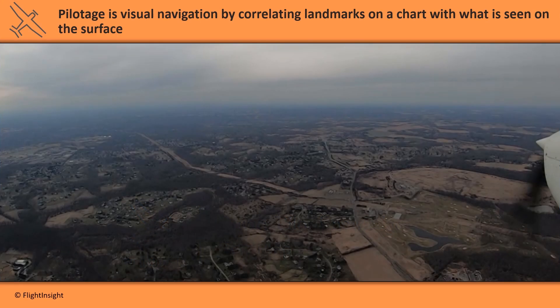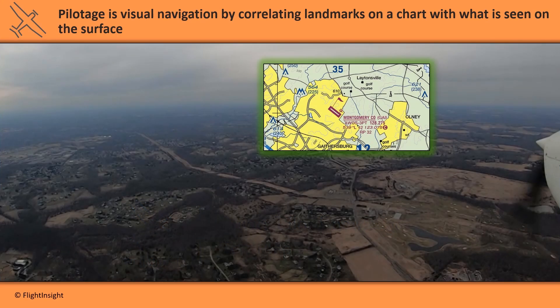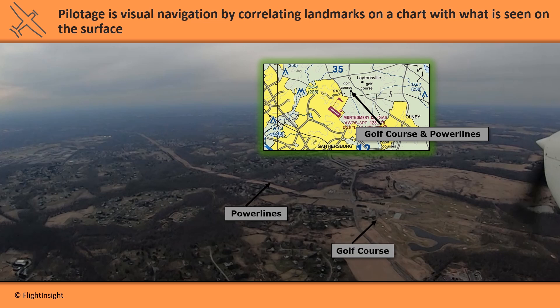The most basic form of navigation is pilotage, which involves visually correlating landmarks on a chart with what's seen on the surface. Here you can see power lines on a golf course listed on a chart and seen from the cockpit.